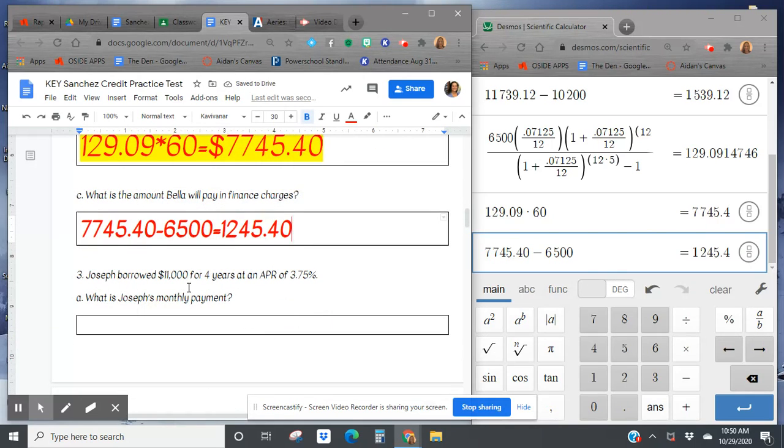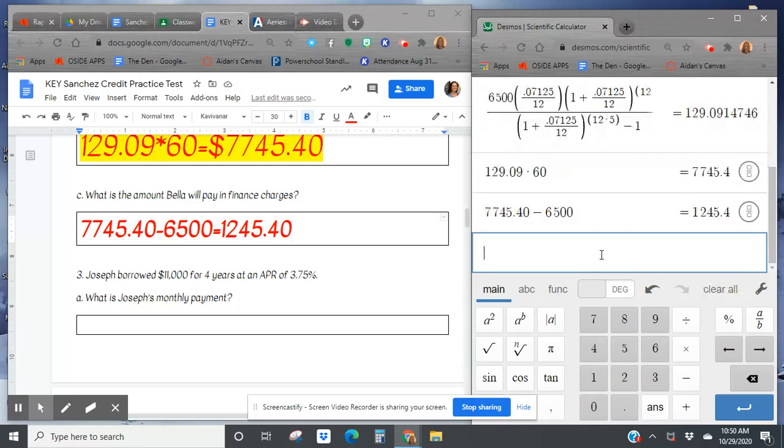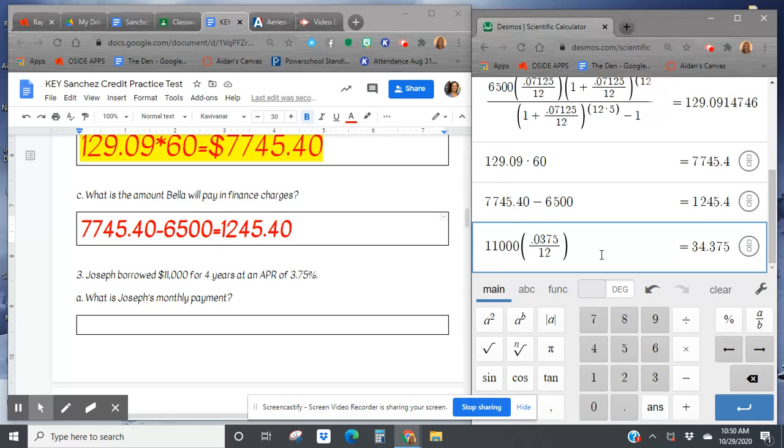Alright, this next loan, Joseph borrowed $11,000 for four years and his APR is 3.75%. So it's a much lower rate. Let's see what the payment is going to look like on this. 0.0375 divided by 12. And plus the rate divided by 12.